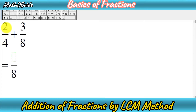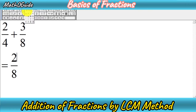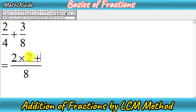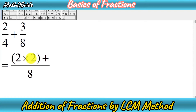After getting 2, you multiply it with the numerator of the first fraction. So 8 divided by 4 gives 2, and we multiply 2 by the numerator 2. Then you write the positive sign, and you can put brackets to make clear that we've solved the first part.